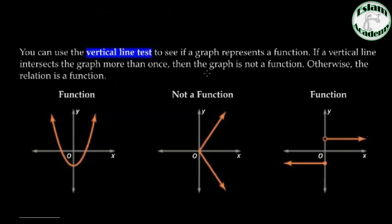What is the meaning of the vertical line test? If we can draw any vertical line that intersects the graph at two points, it means this relation is not a function. For the first graph, we cannot draw any vertical line that intersects the graph at two points.